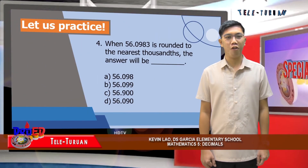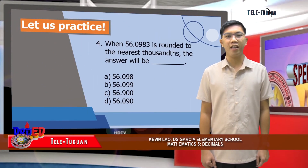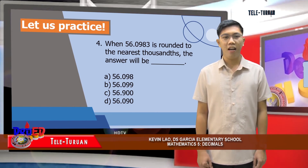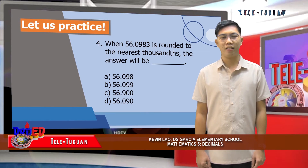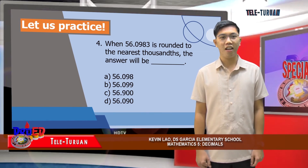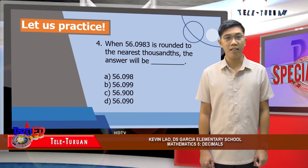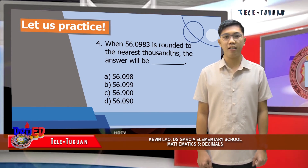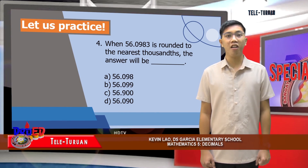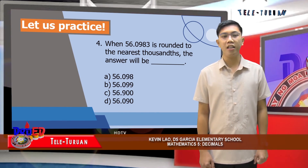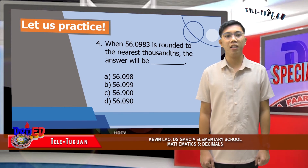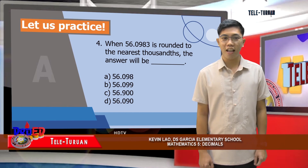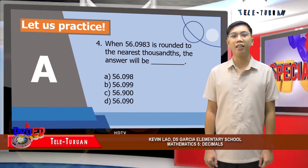For number four: when 56 and 983 ten-thousandths is rounded to the nearest thousandths, the answer will be blank. The choices are A, fifty-six and ninety-eight-thousandths; B, fifty-six and ninety-nine-thousandths; C, fifty-six and nine-hundred-thousandths; or D, fifty-six and ninety-thousandths. The correct answer is A, fifty-six and ninety-eight-thousandths.